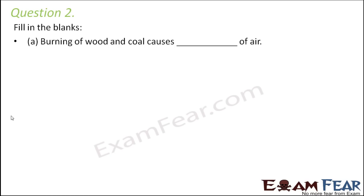Question number two: fill in the blanks. Burning of wood and coal causes dash of air. When we burn wood or coal, they release a lot of poisonous gases and a lot of smoke, so all these cause pollution of air.